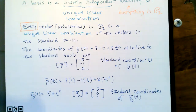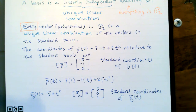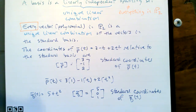We don't want to say just 'the coordinates of the polynomial' because coordinates are always relative to some basis, and there are other bases we could use for any given vector space. Let's pause the video here, take a look, then come back and take a look at some other bases for P2 and write coordinates relative to those bases.